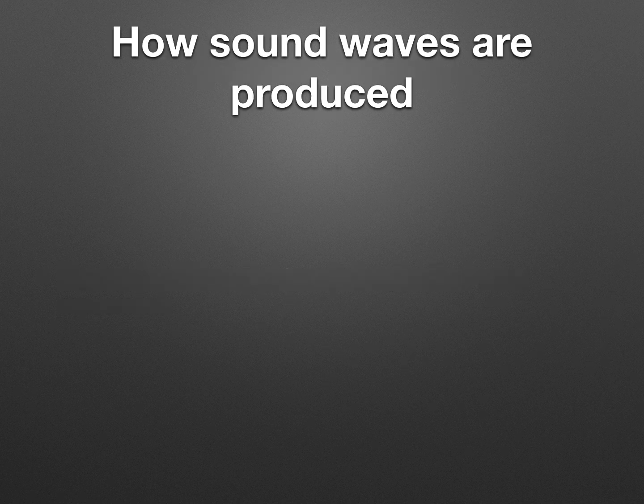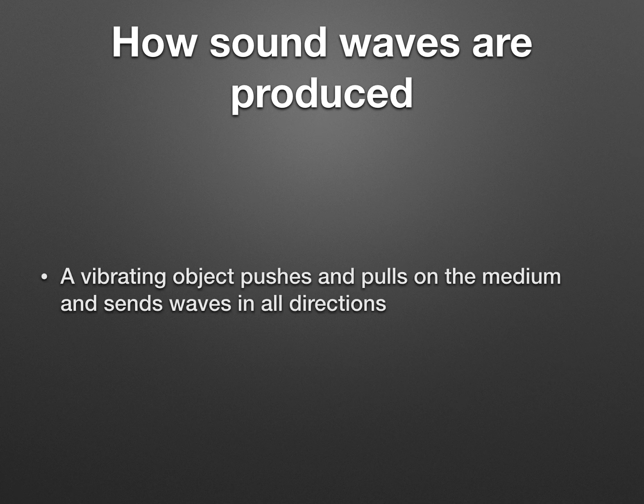How sound waves are produced — produced means how they're made. It's a vibrating object that pushes and pulls on the medium and sends waves in all directions. The key here is vibrations. Sound waves are produced by vibrations. Any sounds you hear — from your voice to a tree falling, to a siren, to an alarm — are all vibrations of some sort in a medium. That medium can be solid, liquid, or gas.